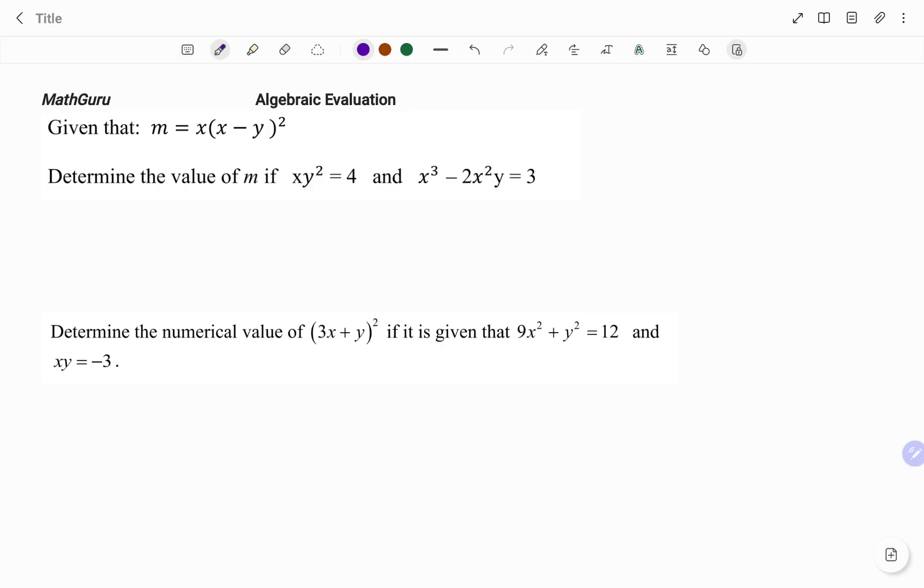In the first example, we have given that m equals x multiplying x minus y all squared. Determine the value of m if xy squared equals 4 and x cubed minus 2x squared y equals 3.